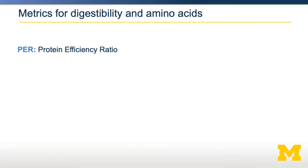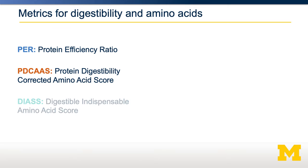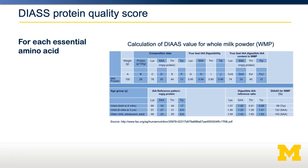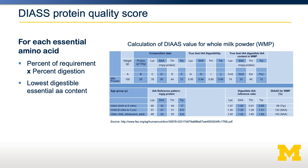There are three metrics to actually quantify both the digestibility and completeness of a protein. Common ones used are the PER, the PDCAS, and the DIASS score. In all of these, you calculate the content of the limiting amino acid and then integrate how digestible and absorbable that amino acid is from that protein source. We're going to go through a DIASS calculation as an example. For each essential amino acid, we calculate how much of that amino acid is present and multiply it by the fraction of it that is digestible. The amino acid with the lowest digestible content is the limiting amino acid. These are then compared to age-related reference patterns to determine the score for that particular protein.